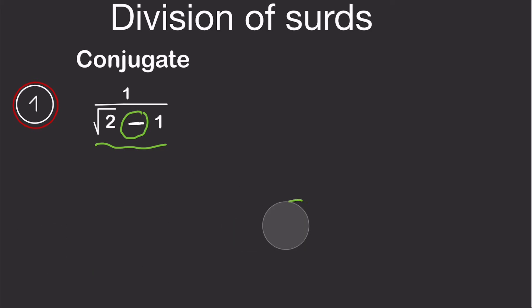To get the conjugate, we change the sign in the middle of the denominator. So the conjugate of root 2 minus 1 is root 2 plus 1, since the sign in the middle is a minus. To simplify, you need to multiply both the numerator and the denominator by the conjugate.